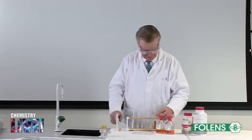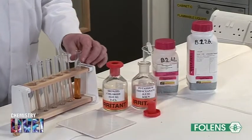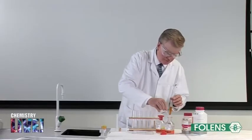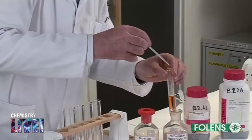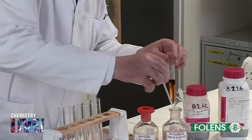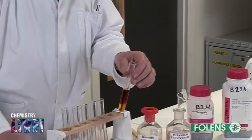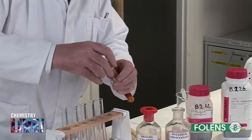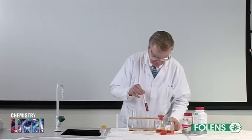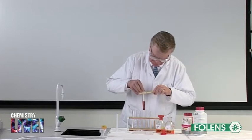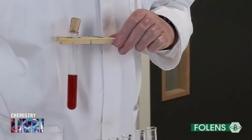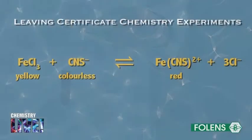Now add in some potassium thiocyanate solution. Note that a red colour is observed. In keeping with Le Chatelier's principle, the solution becomes red because the equilibrium is shifted to the right hand side of the equation shown on the screen in order to absorb the thiocyanate ions added.